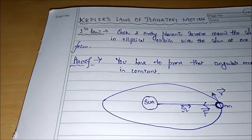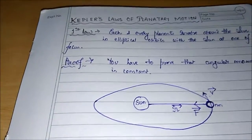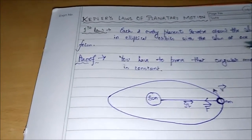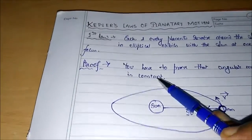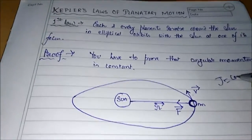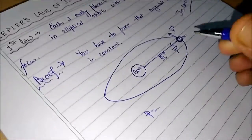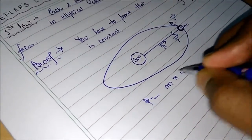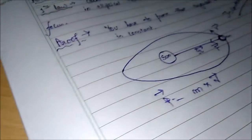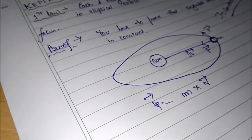Elliptical paths have two foci, and the Sun will be present at any one of the foci. To prove this, you have to prove that angular momentum is constant — that is, J equals a constant. To prove this, let's look at the concept of linear momentum. The linear momentum of this system is equal to mass of the planet times the velocity vector, represented by P. The direction of the linear momentum matters.